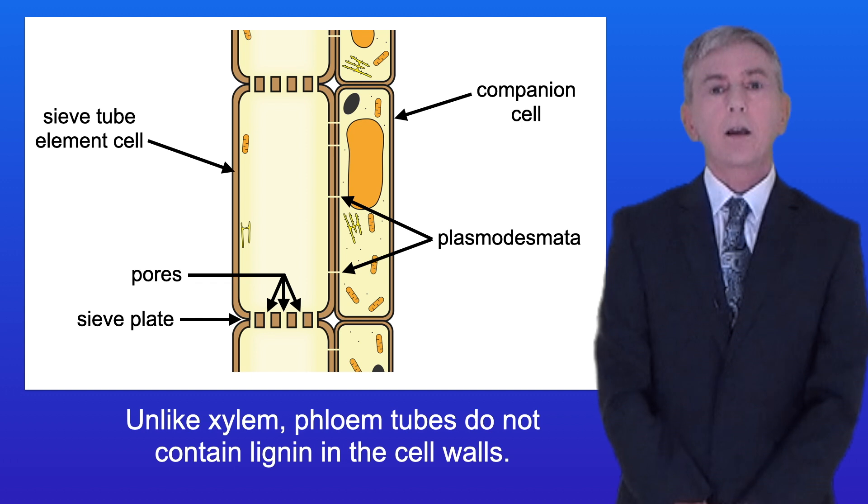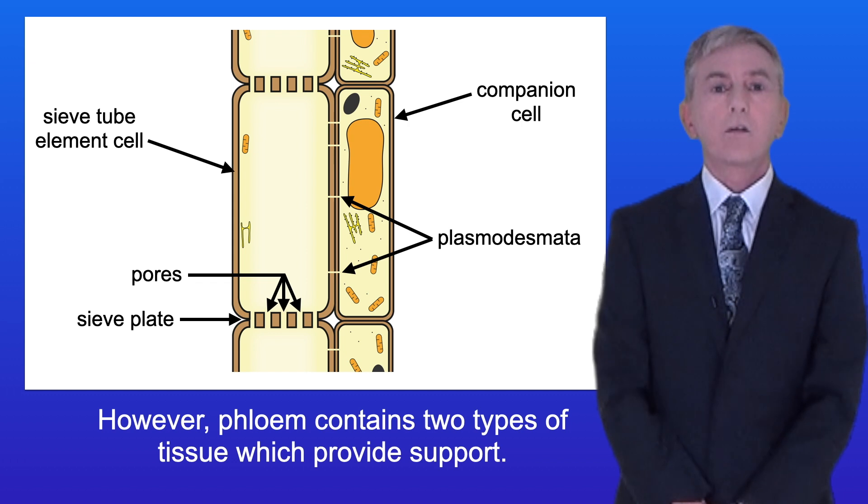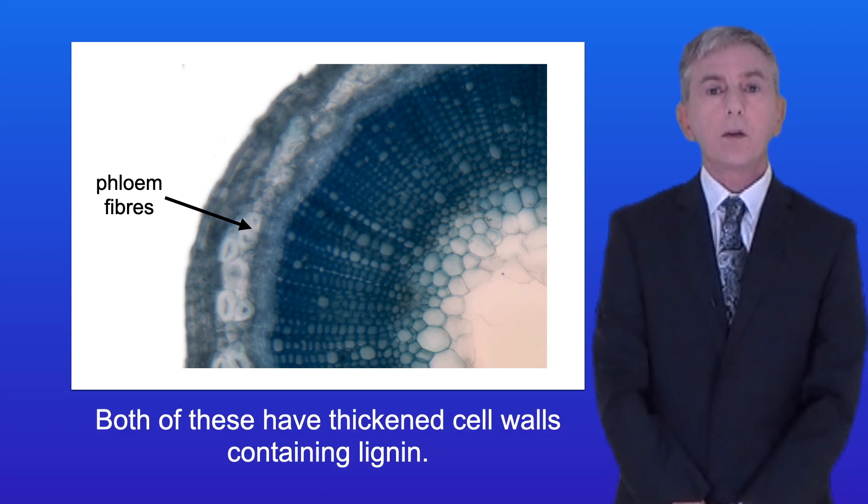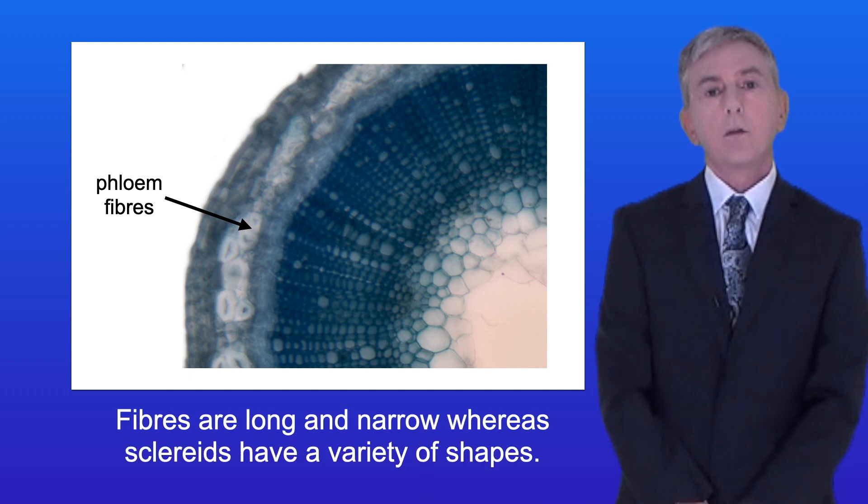Unlike xylem, phloem tubes do not contain lignin in the cell walls. However phloem contains two types of tissue which provide support. These are called fibers and scleroids. Both of these have thickened cell walls containing lignin. Fibres are long and narrow whereas scleroids have a variety of shapes.